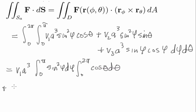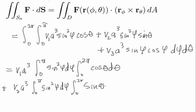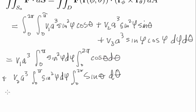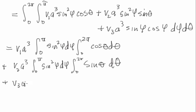And then plus v2 a cubed, integral zero to pi sine squared phi d phi, integral zero to two pi sine theta d theta. And then plus v3 a cubed, and then now there's really no non-constant theta terms here, so I'm just going to get a 2 pi from the theta integration,